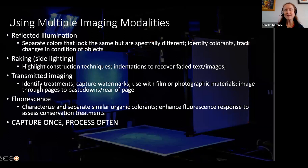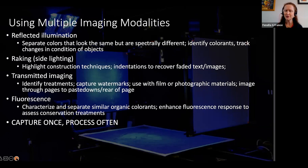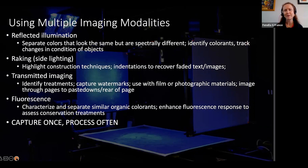One of the really fantastic things using ENVI is that we don't just do reflected imaging but also a number of different imaging modalities: raking or sidelighting, transmitted imaging through the object, and fluorescence imaging which captures various components in terms of pigments. When we put these all together into one huge data cube, we've got an awful lot of information. We can capture once and process often, because researchers often come back wanting more, and we can answer different questions with that combination of modalities.